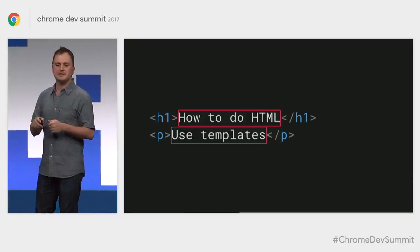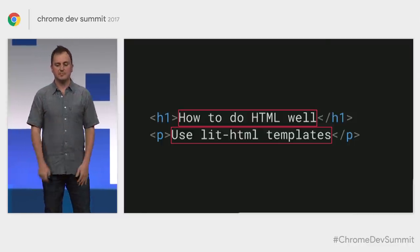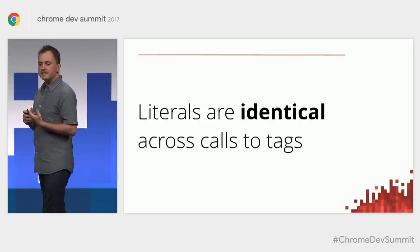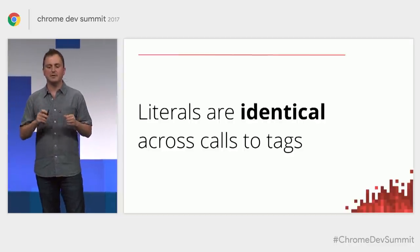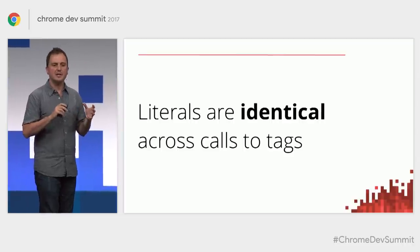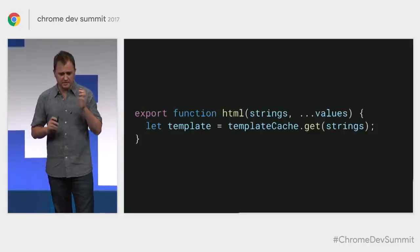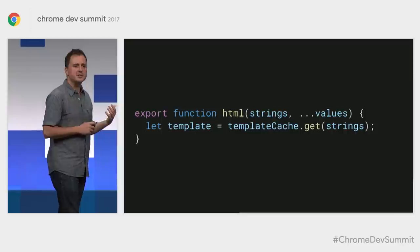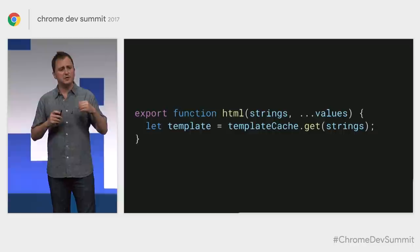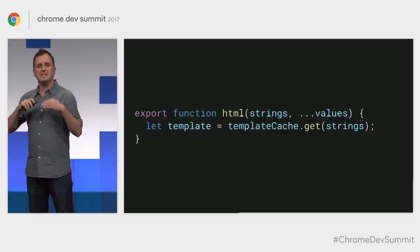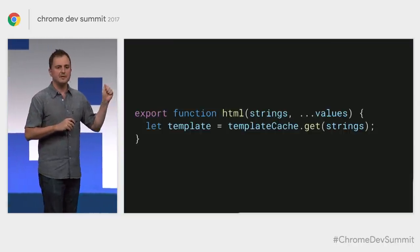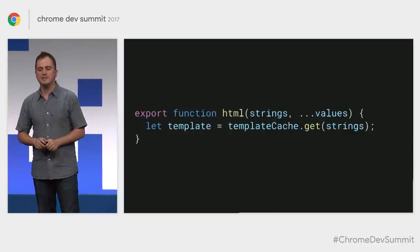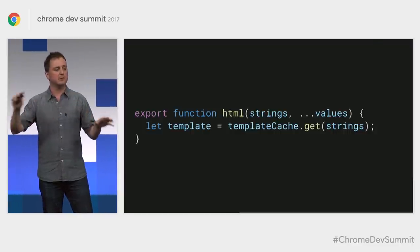Another thing that makes Lit HTML fast is a property of template literals: the literal strings passed to a tag function are the same object for every call to that tag with the same template. This lets us do one-time setup — like preparing the HTML template element — only once. The first argument to the tag function is an array of all literal parts, and we can use it as a cache key to look up our prepared template. So all the work of transforming a JavaScript template to an HTML template and remembering the dynamic parts is only ever done once per template, no matter how many times or places it's used.